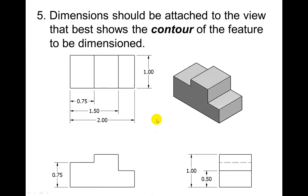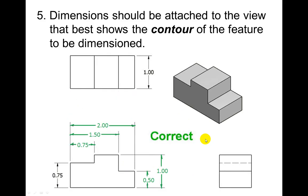Dimension should be attached to the view that best shows the contour of the feature to be dimensioned. So this one would be incorrect because there's more contour here. Same thing here, more contour on this one. So again, you see it again. This is the correct way.